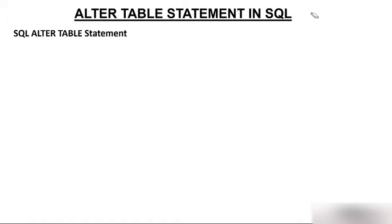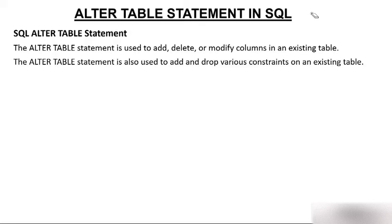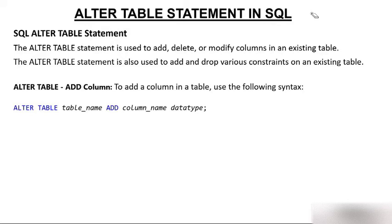The ALTER TABLE statement is used to add, delete, or modify columns in an existing table. It is also used to add and drop various constraints on an existing table — constraints like primary key and foreign key. Suppose there is no primary key and you want to add one, or there is a primary key and you want to remove it — you can use ALTER for that as well.